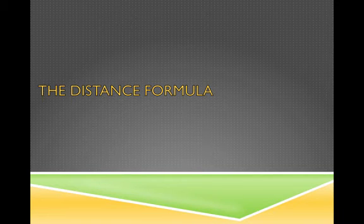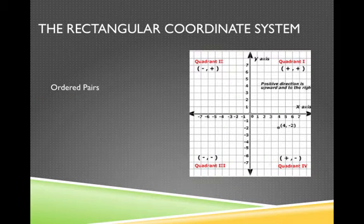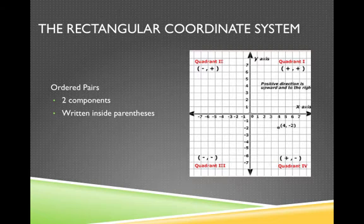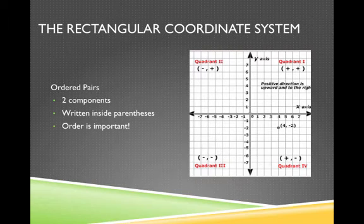Alright, the distance formula. So let's review a little bit on the rectangular coordinate system here. You guys know we have ordered pairs. I'm hoping you know that by this point. Each ordered pair has two components, an x component and a y component. We use parentheses to denote ordered pairs, and of course order is important. It always goes x, y, or the horizontal axis, the vertical axis.